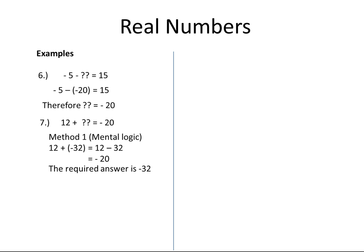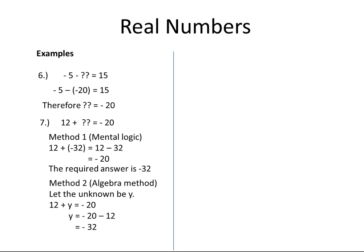If you do not want to use mental calculation, you can use the algebra method and let the unknown value be y. So 12 plus y is equal to minus 20. I subtract 12 from both sides of the equation. On the left-hand side, 12 minus 12 becomes 0, leaving only y. On the right-hand side, I have minus 20 minus 12. Therefore y is equal to minus 20 minus 12, which is equal to minus 32.